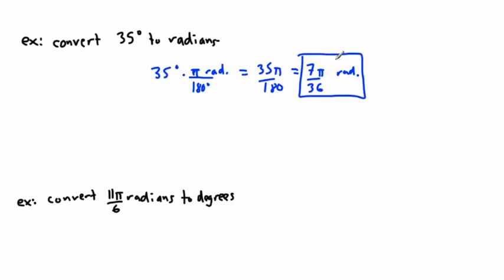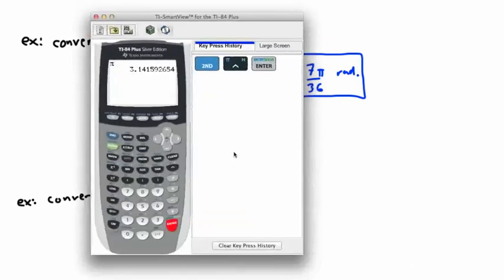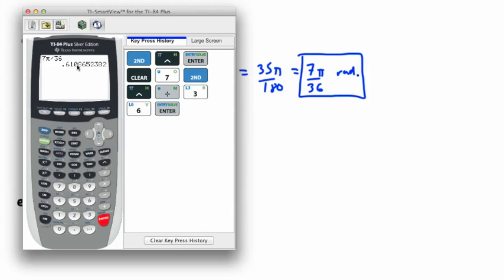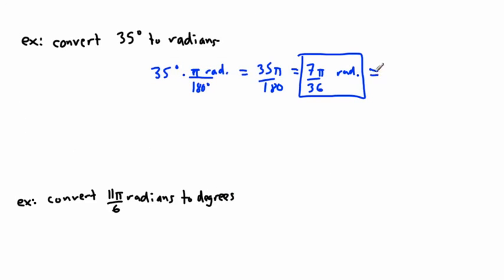You can actually calculate that on your calculator. What is 7 times π divided by 36? I'll get an answer of 0.61 roughly, so it's almost equal to 0.61. It's not exactly, it's approximately this, that's why I put the dot on top. So it's about 0.61 radians.